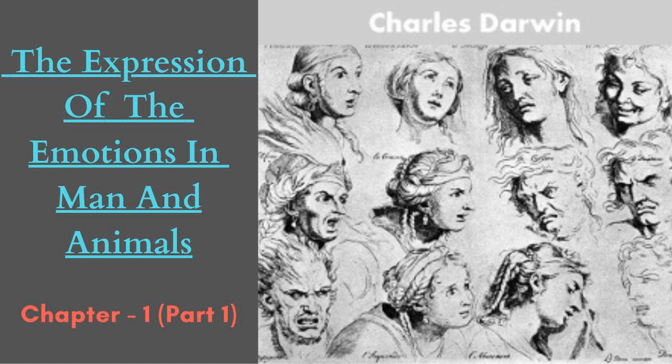For this moth, shortly after its emergence from the cocoon — as shown by the bloom on its unruffled scales — may be seen poised stationary in the air with its long hair-like proboscis uncurled and inserted into the minute orifices of flowers; and no one, I believe, has ever seen this moth learning to perform its difficult task, which requires such unerring aim. When there exists an inherited or instinctive tendency to the performance of an action, or an inherited taste for certain kinds of food, some degree of habit in the individual is often or generally requisite. We find this in the paces of the horse, and to a certain extent in the pointing of dogs, although some young dogs point excellently the first time they are taken out, yet they often associate the proper inherited attitude with a wrong odour and even with eyesight.